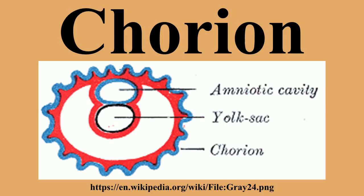The chorion consists of two layers: an outer formed by the trophoblast, and an inner formed by the somatic mesoderm. The amnion is in contact with the latter. The trophoblast is made up of an internal layer of cubical prismatic cells, the cytotrophoblast, a layer of Langhans, and an external layer of richly nucleated protoplasm devoid of cell boundaries — the cytotrophoblast.